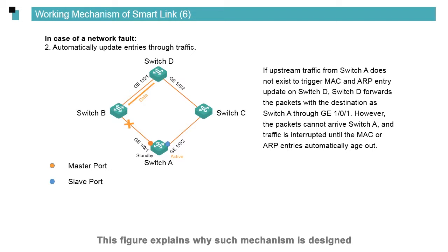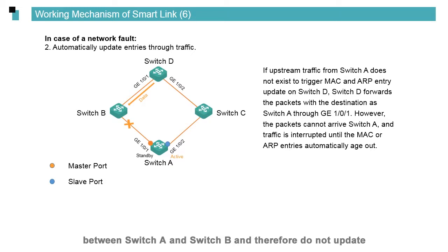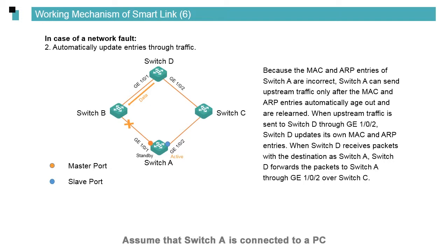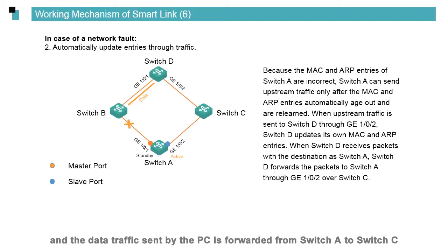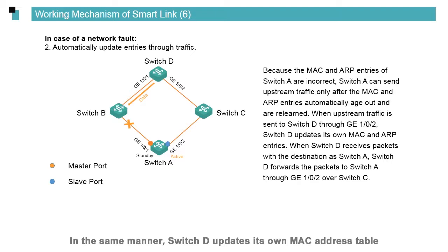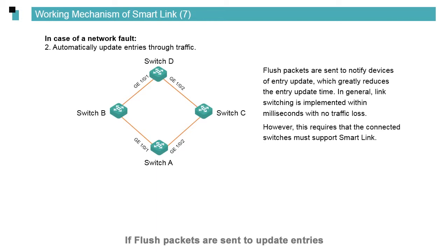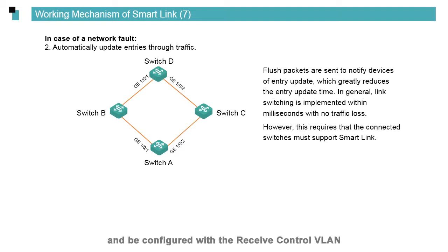The mechanism that entries are updated through automatically transmitted traffic is suitable for scenarios where upstream devices do not support smart link. Switch C and switch D cannot get aware of a link fault between switch A and switch B, and therefore do not update their own MAC entries. When switch A is connected to a PC, the data traffic sent by the PC is forwarded from switch A to switch C, which updates its MAC address table upon receipt. Similarly, switch D updates its own MAC address table. The efficiency of this mode is low compared with sending flush packets. If flush packets are used to update entries, all upstream devices need to support smart link and be configured with the receive control VLAN.